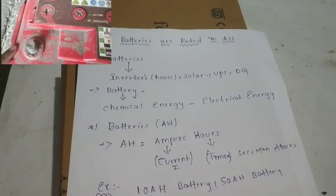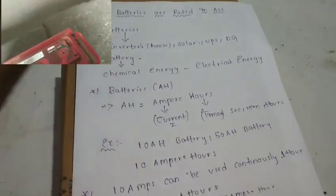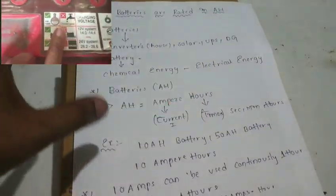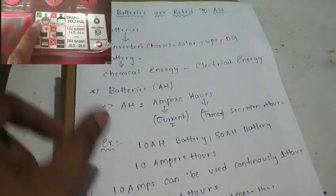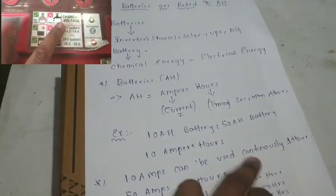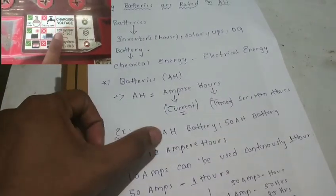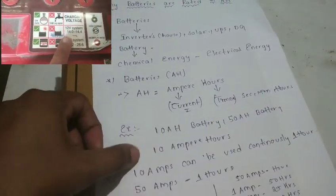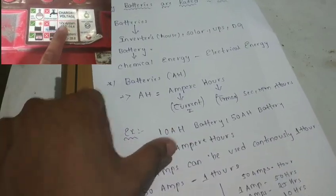Ampere is the current. Hours is the time. Suppose we have a 10Ah battery — that is 10 ampere hours. 10 amps can be used continuously in one hour: 10 amps multiplied by 1 hour.